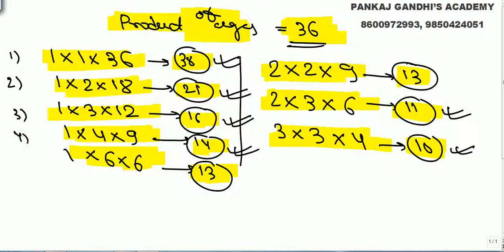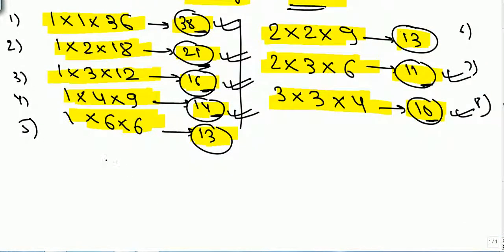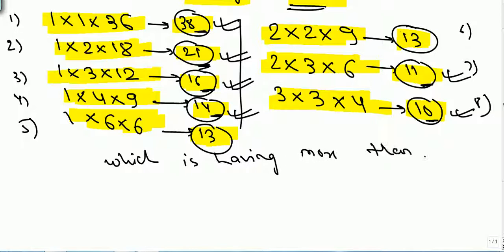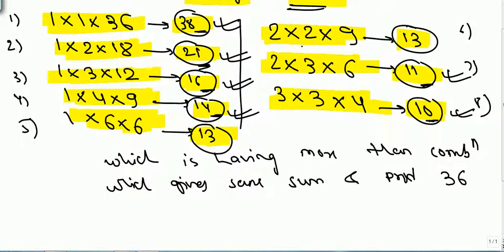But this is a very intelligent person — even after knowing the product is 36, he knows the answer can be any one of these eight cases. We tell him go and check the door number. Now even after looking at the door number he could not get the answer. This means the door number has to be a number which has more than one combination giving the same summation and product 36. There is only one such door number — door number 13.